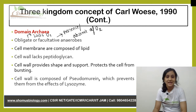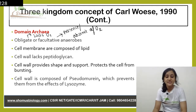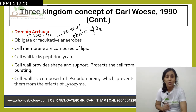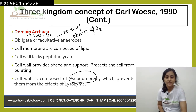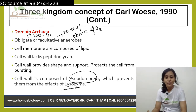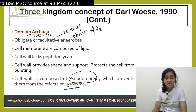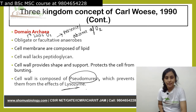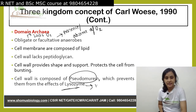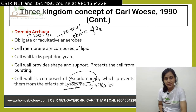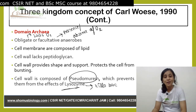The cell membranes are composed of lipids. The cell wall lacks peptidoglycan. The rigid cell wall provides shape and support to the archaebacteria. It also protects the cell from bursting under hypotonic conditions. The cell wall is composed of pseudomurein, which prevents them from the effects of lysozyme — an enzyme released by the immune system of the host which dissolves the cell wall of pathogenic bacteria.